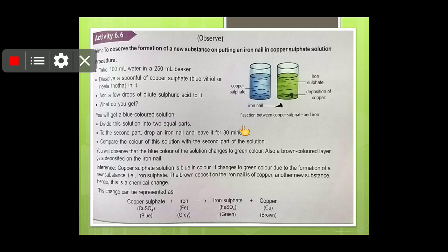Then what you will see, you will get a blue color solution. Divide the solution into two equal parts. And then to the second part, drop the iron nail and leave it for 30 minutes. What change you will observe? Compare the color of the solution. So you will observe that the blue color solution will change into green color. Here also a brown colored layer will get deposited on the iron nail. So here the chemical reaction has taken place. That copper sulfate solution is blue in color. It changes to green color due to formation of new substance, that is iron sulfate. A brown colored deposit on iron nail is copper, another new substance. Hence this is a chemical change.